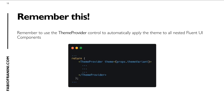The last thing to remember is to use the ThemeProvider control to automatically apply the theme to all the controls you use. You nest the ThemeProvider inside your React control. It's very important because, by passing our theme variant property to the theme parameter of the ThemeProvider, it automatically applies the current theme to all Fluent UI components inside your main control.